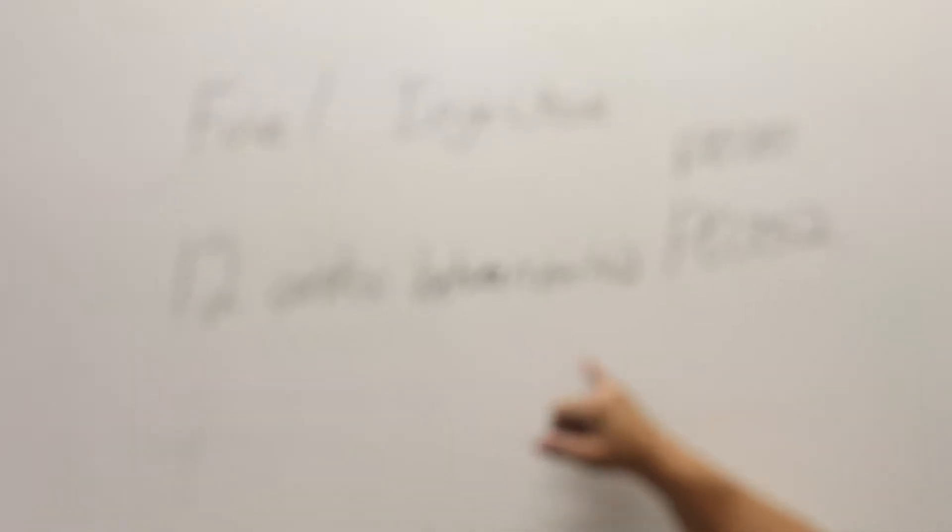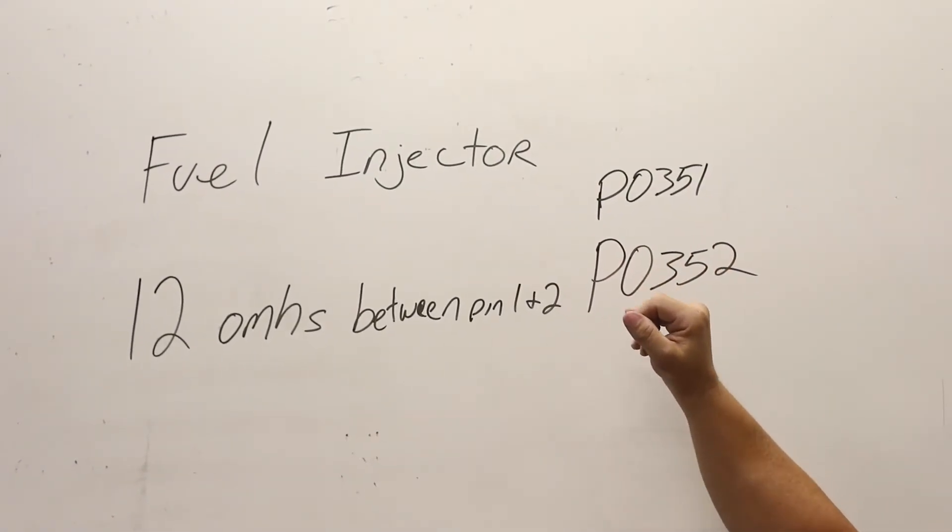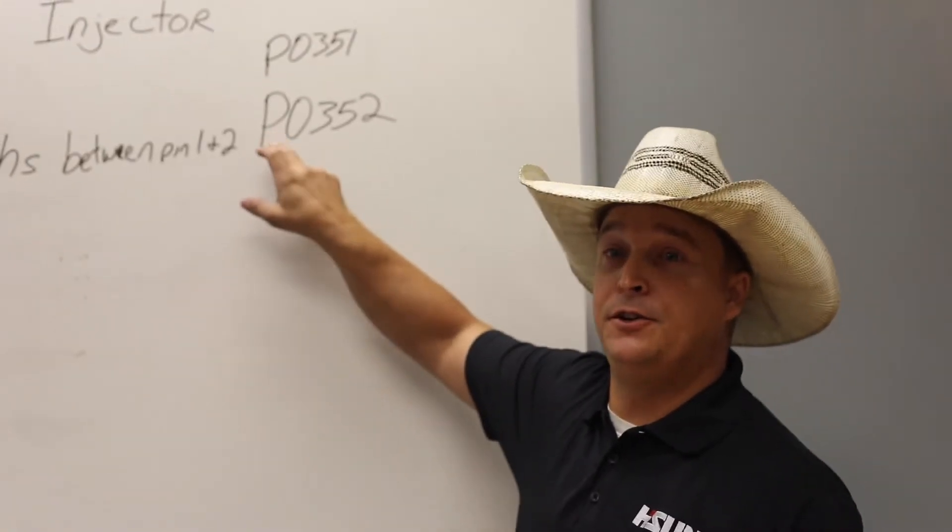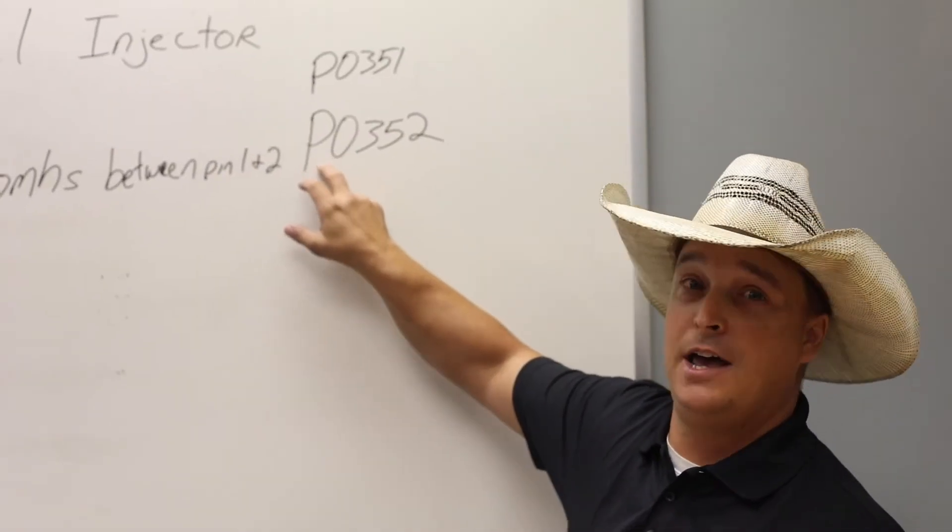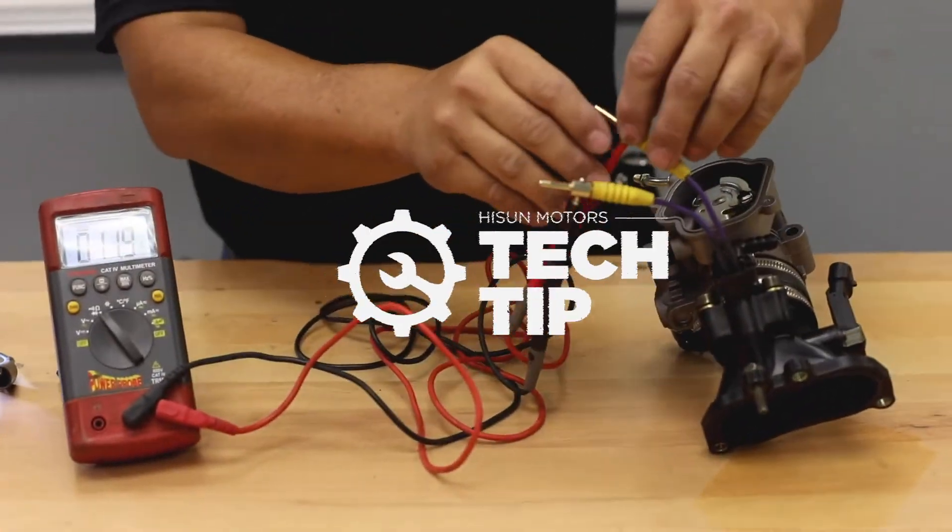The code you're going to get with this is P0352 and P0351. Once again, the P is for your scan tool. If you do not have a scan tool, this may be an E on your dash or it may not have a letter at all—it may just be the numbers. And that's how you test that.